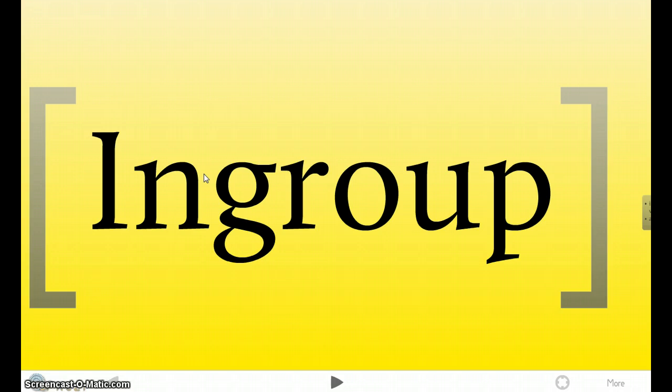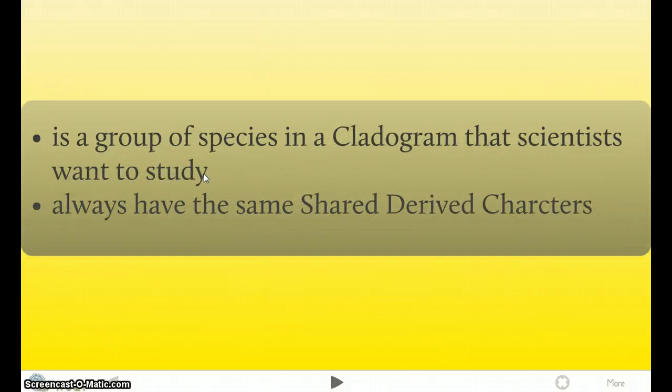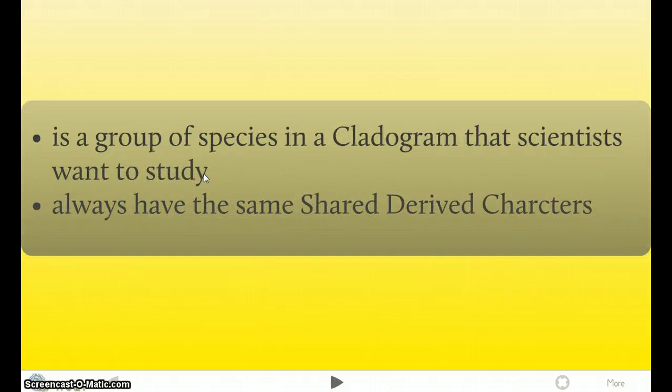The next term is called an In-Group. Each Cladogram has an In-Group and an Out-Group. The In-Group is a group of species in a Cladogram that scientists want to study. And just a fact, all of the species in the In-Group always have the same Shared Derived Character or characters. That's what makes them the In-Group.